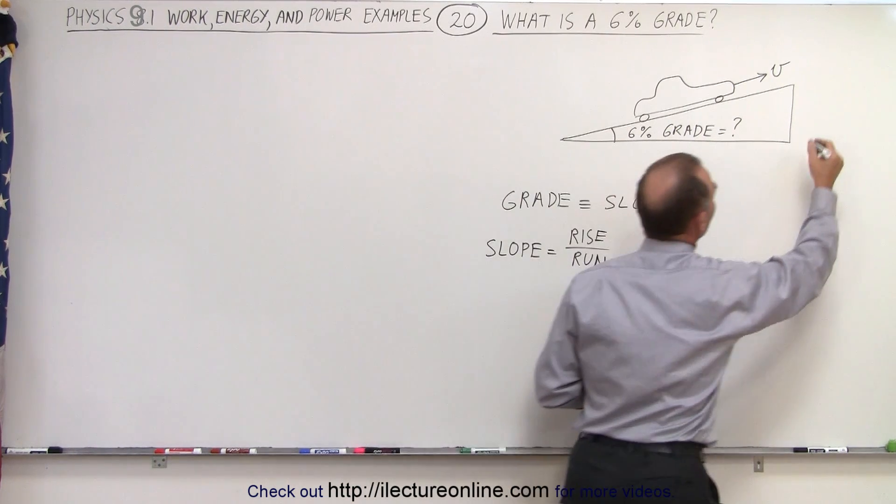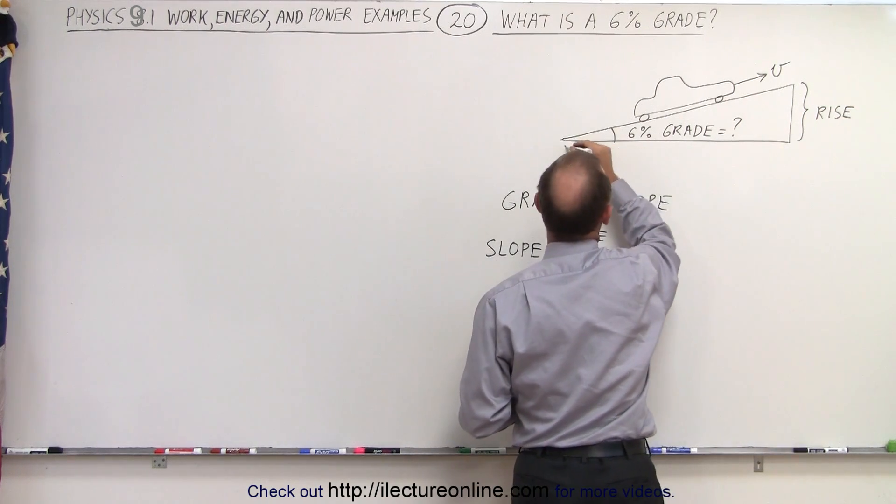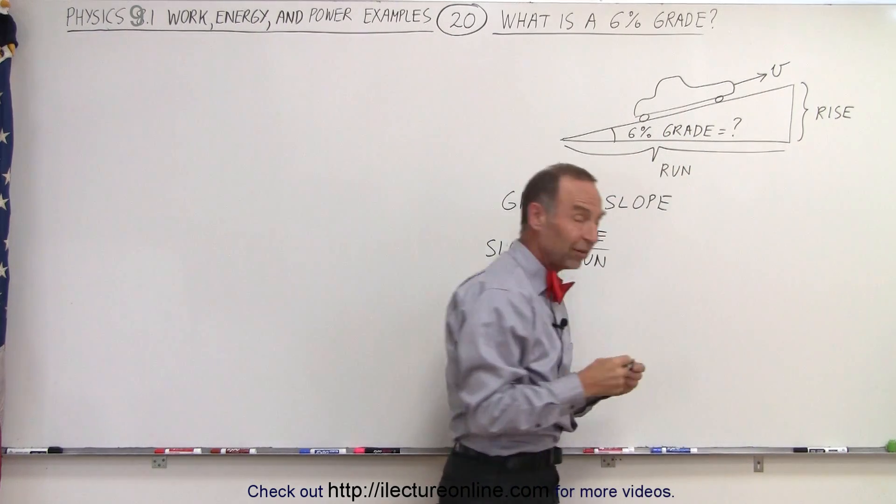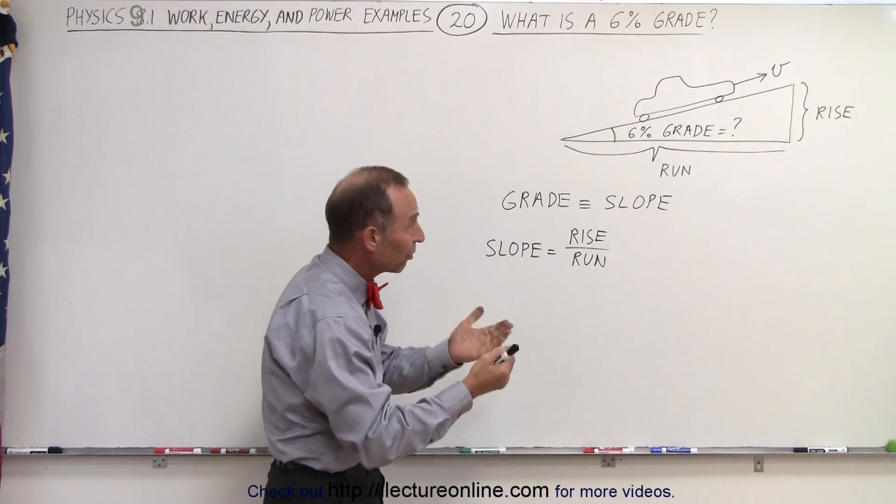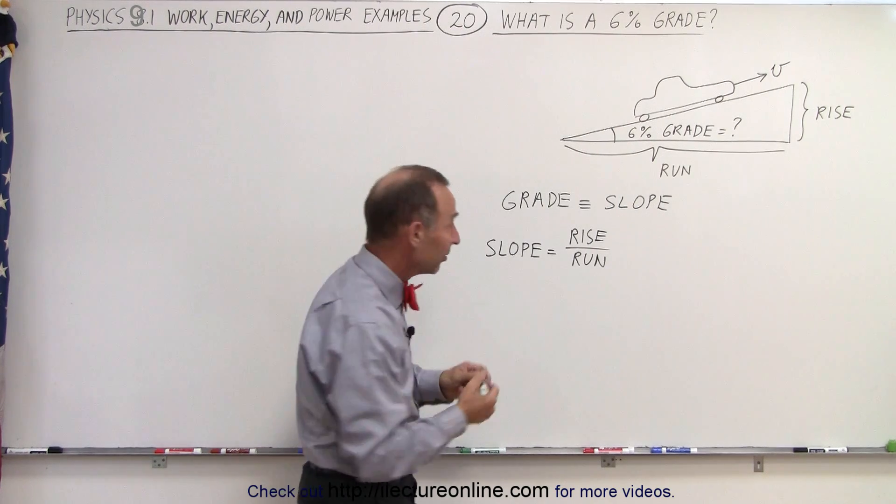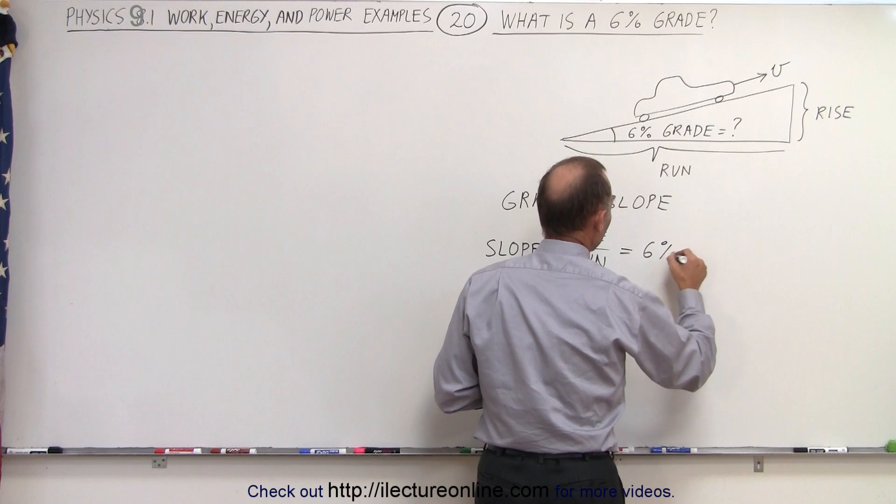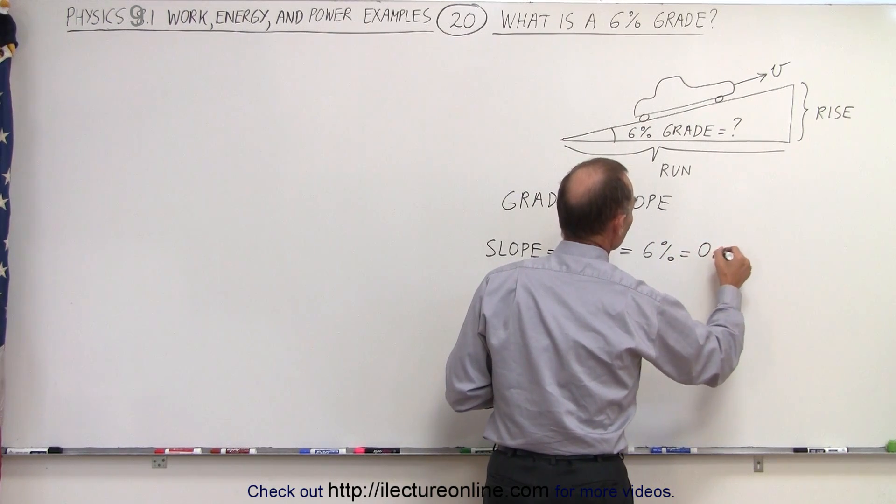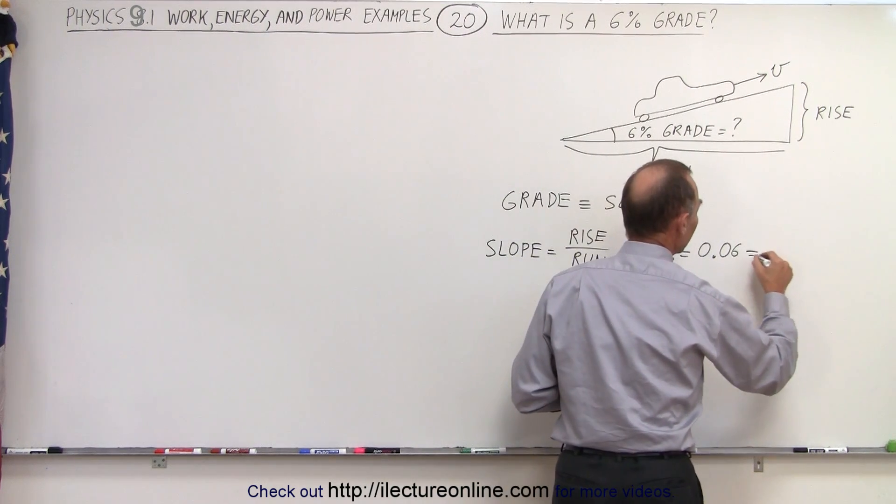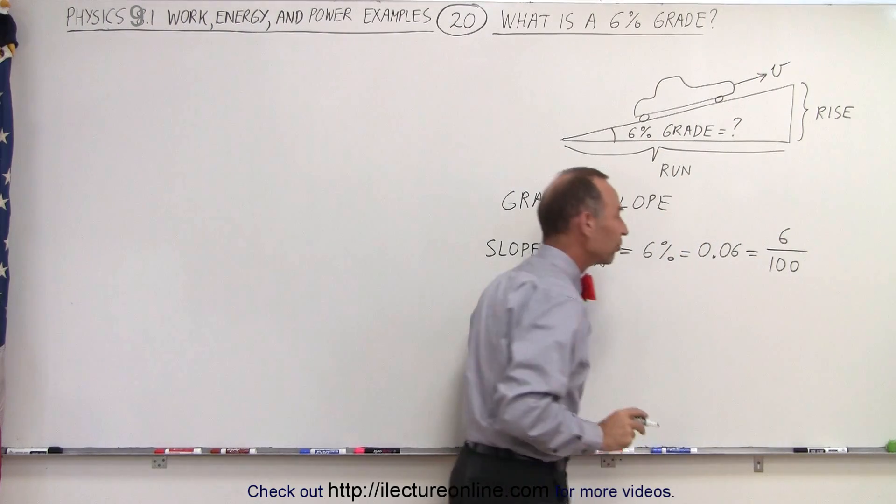So when we take a look at this, this here represents the rise, this here represents the run, and the grade is exactly that ratio. It's the ratio of the rise divided by the run. And if that is equal to 6%, that means this is equal to 0.06. So that's the percentage written as a decimal, which means this is the same as 6 divided by 100, written as a fraction.